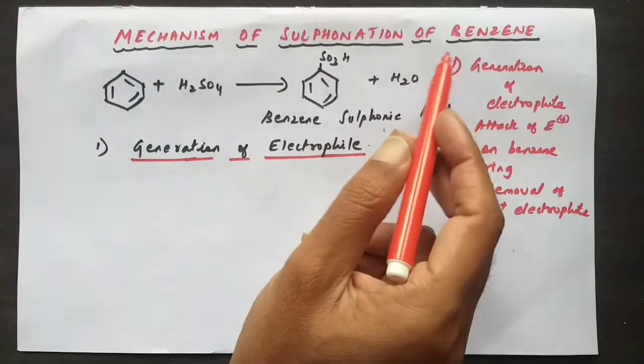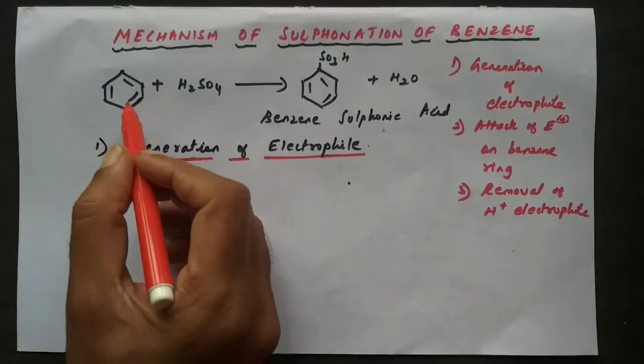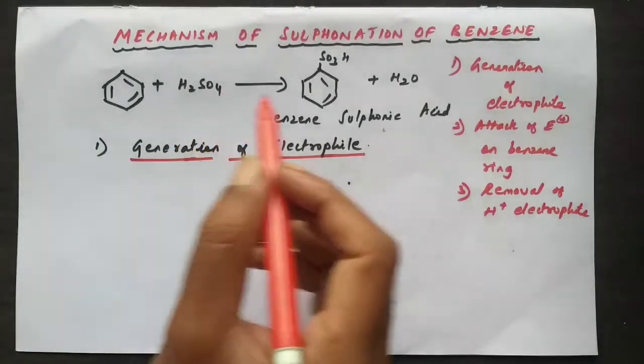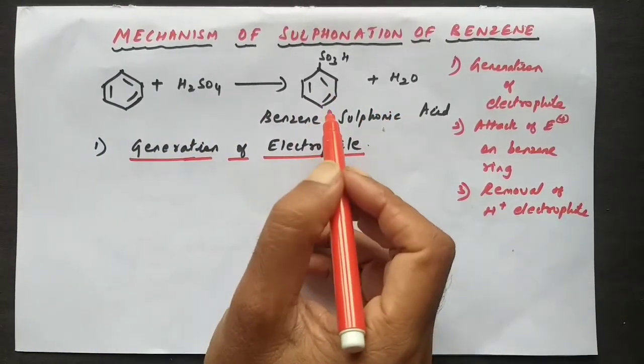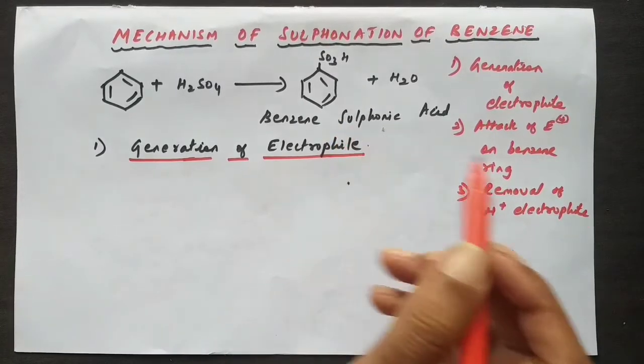So mechanism of sulfonation of benzene. Benzene when treated with sulfuric acid gives benzene sulfonic acid. That's the basic reaction, but mechanism is very important.